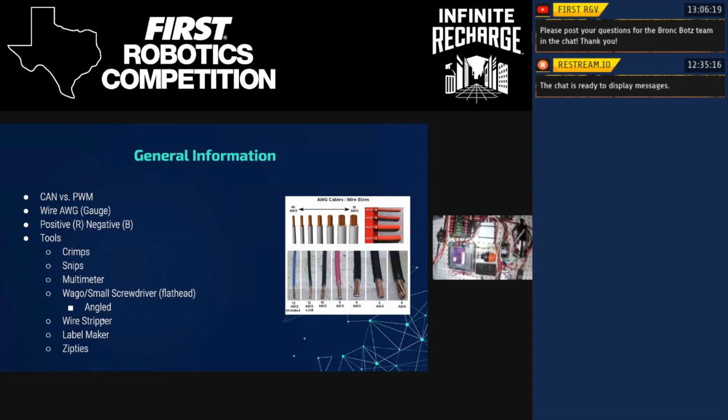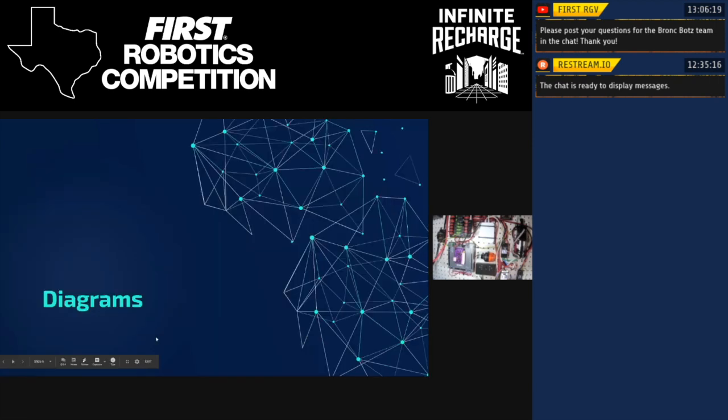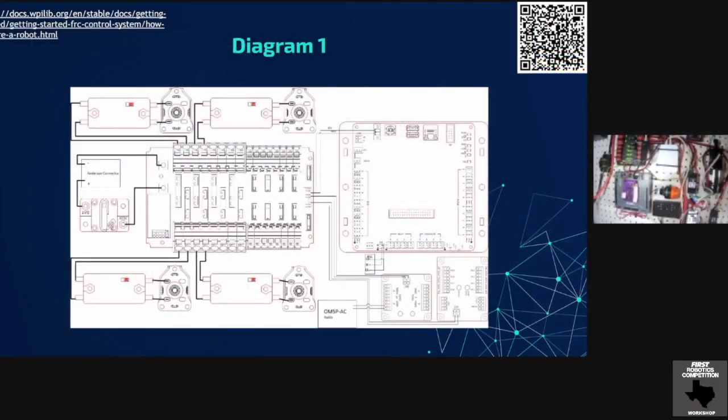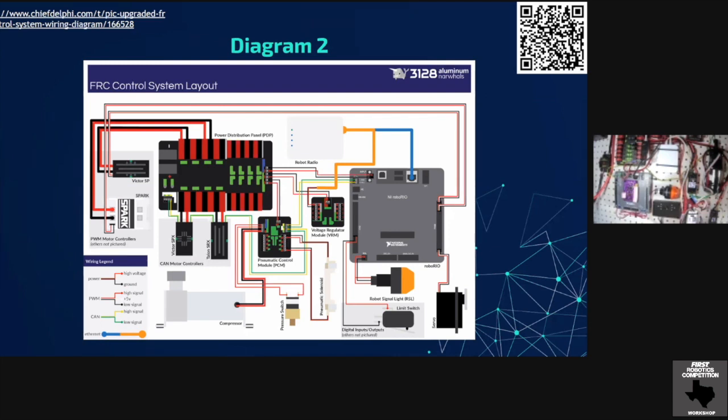So next thing I'm going to quickly go over is a couple of diagrams. This first diagram is straight from FIRST. I don't particularly love this diagram because it's not color coded. So this is our second diagram. This is borrowed. I found this on Chief Delphi. It is open source from 3128 Aluminum Narwhals. And as you can see in this top right corner, I put a little QR code. You guys are more than welcome to scan that, to use it, do whatever you want with it, or you can just look it up. But I recommend having these in your general area while you're doing wiring because it's a really good reference point.